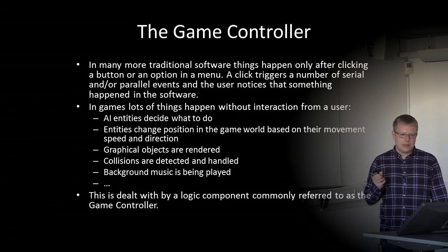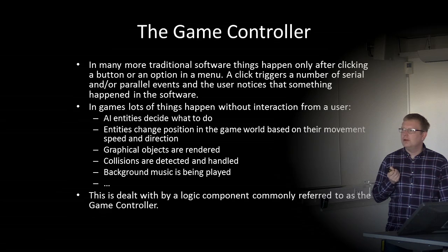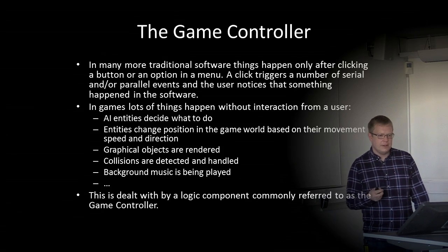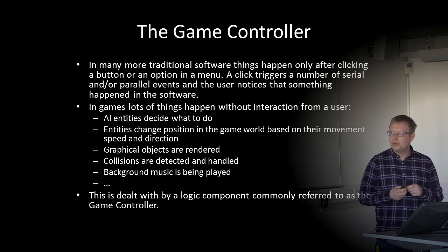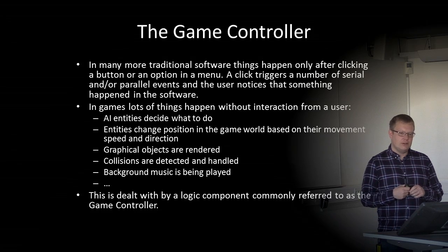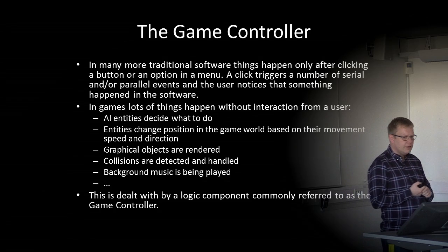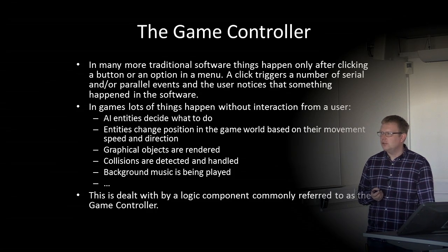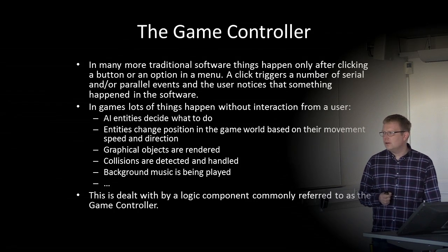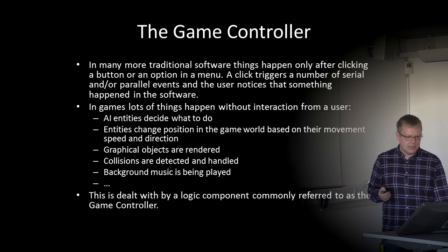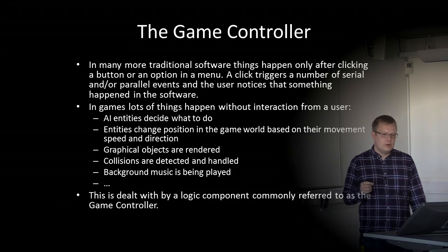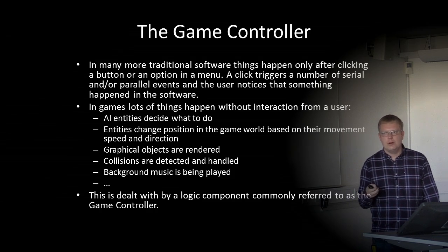An essential element when designing a game system architecture is the game controller. In many traditional software systems, things happen only after clicking a button or selecting a menu option — a click triggers a series of events. In games, a lot of things happen without any user interaction: AI entities decide what to do, entities change position based on movement speed and direction, graphical objects are rendered, collisions are detected and handled, and background music plays. This is dealt with by a logic component commonly referred to as the game controller, which controls what happens when we are not interacting with anything.